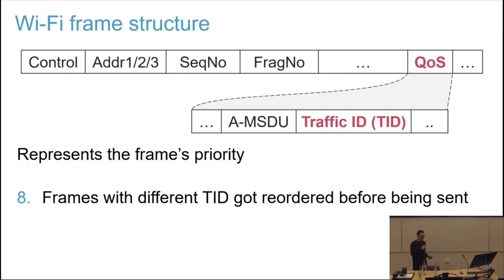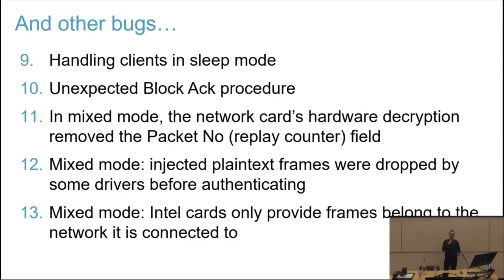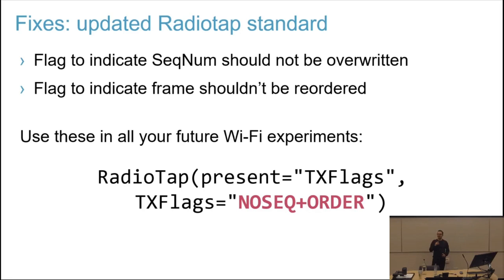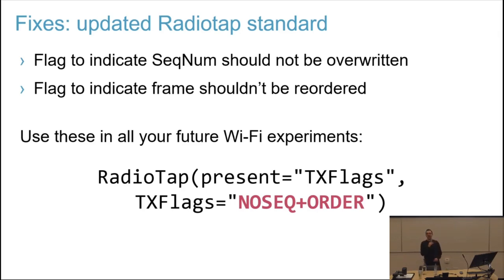I will show an example of that in a bit. We also discovered many other issues — for that I recommend you read the paper. There are various edge cases where things can go wrong if you're really exploring the depths of the Wi-Fi standard and implementations. To address these issues and prevent researchers from going through the same trouble, we first updated the RadioTap standard, which is used in Linux and other operating systems, so that you can tell the OS not to override certain fields and that injected Wi-Fi frames should not be reordered relative to each other.